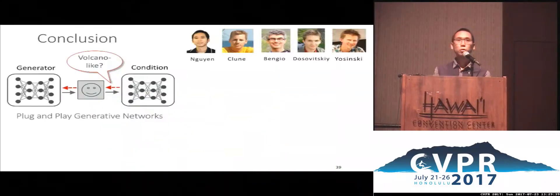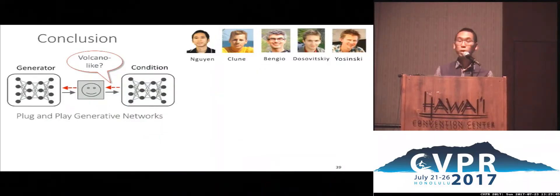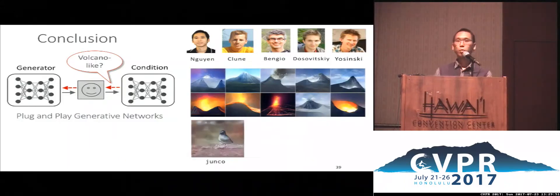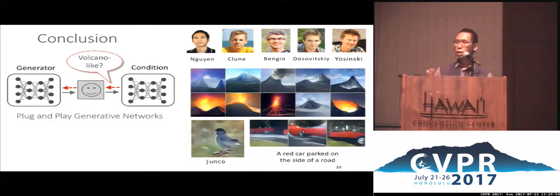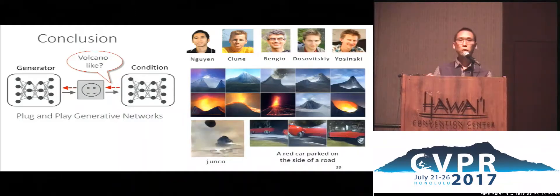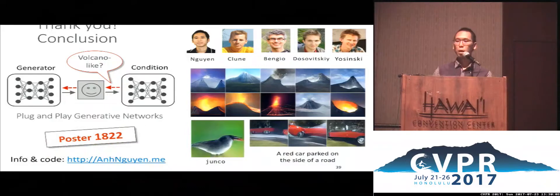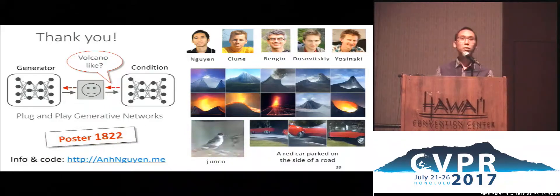In conclusion, we propose plug-and-play generative networks for the task of conditional image generation. PPGN can generate high-quality, high-resolution images for ImageNet. The same system can also be creatively conditioned on many different things like text, semantic mask, multiple neurons, multiple networks, and so on. More information and code are available online. Please come by our poster number 31 for more discussions and results. Thank you.